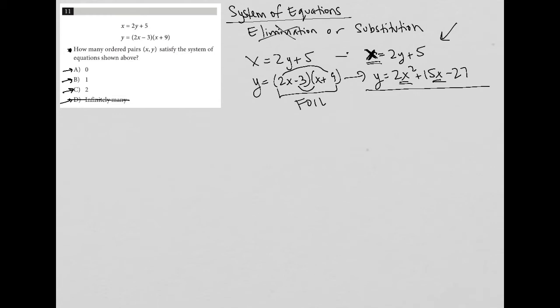I have two options for substitution. I could take the value of x, this 2y + 5, and plug it into these two x terms. Or I can take the value of y, this entire 2x² + 15x - 27, and plug it into the y value there. I'm going to choose to do the second one just because I don't want to have to deal with squaring. If I plug this into the x, I'd have to square it there, and I don't want to have to deal with that. So that's my choice. I think that it's a wise choice.